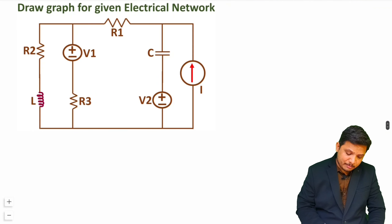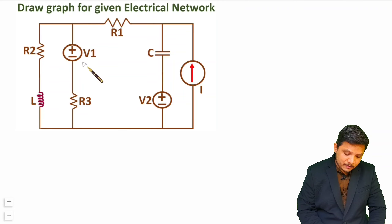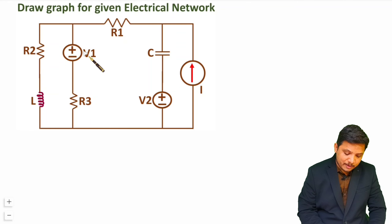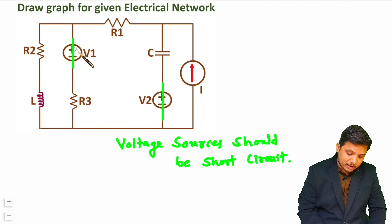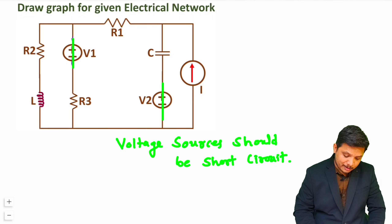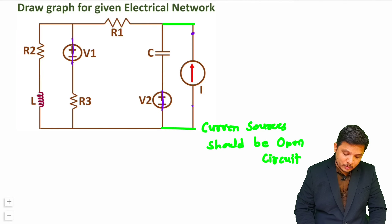Let us look at the first example. We have one electrical network. First of all, we need to identify voltage sources and current sources. There is one voltage source here, so it will be short circuited — I am providing a short over here. And this current source should be open circuit, so I am considering that as open circuit.